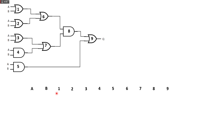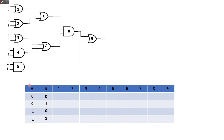We are going to determine the possible inputs. For A: 0, 0, 1, 1 — and for B: 0, 1, 0, 1. Those are the possible input combinations. We are going to write a table to stay organized.